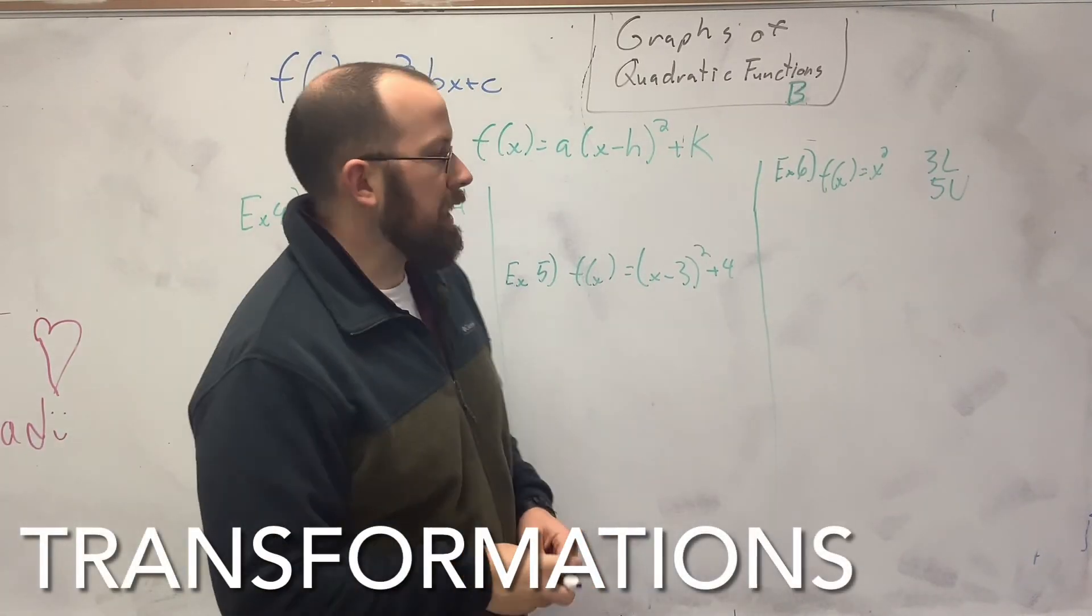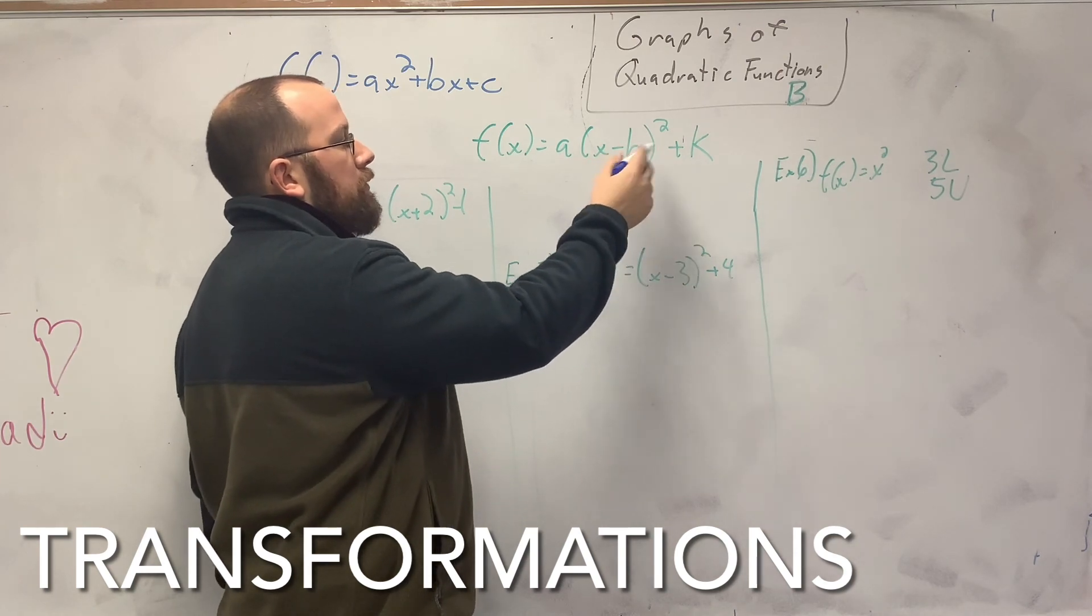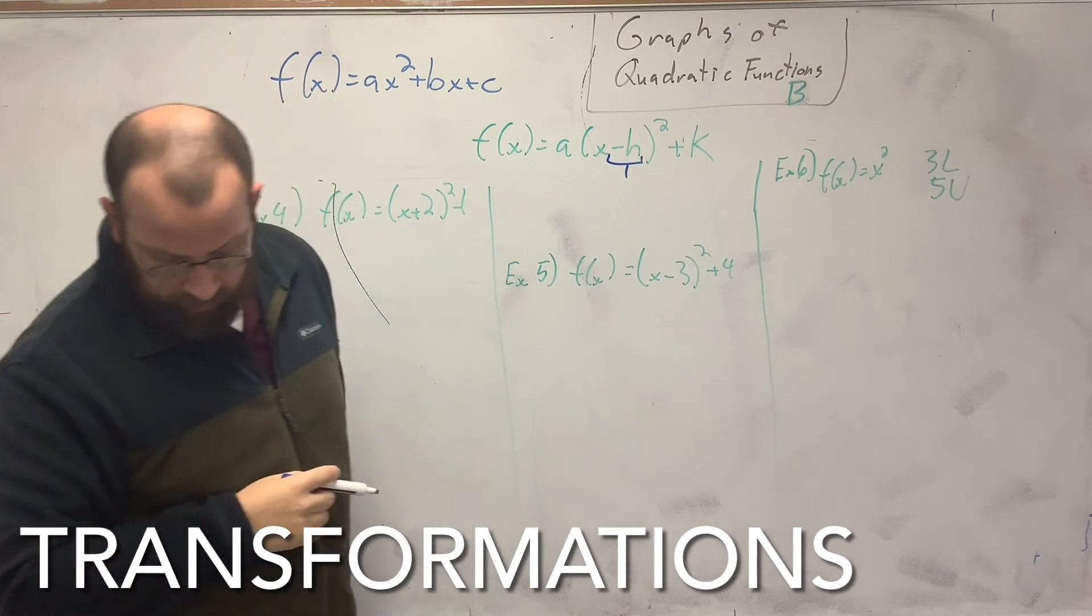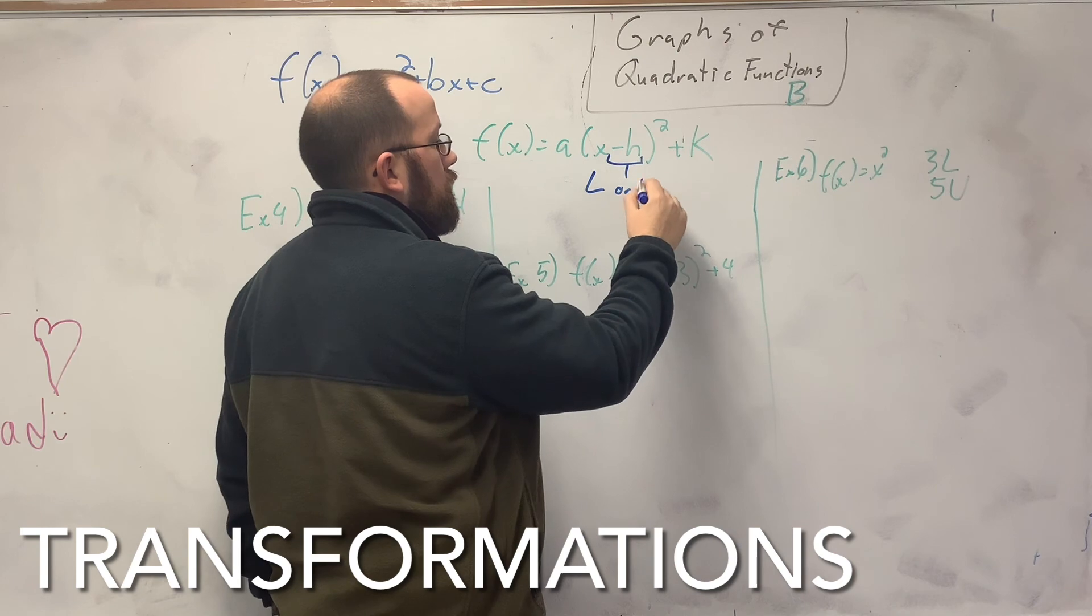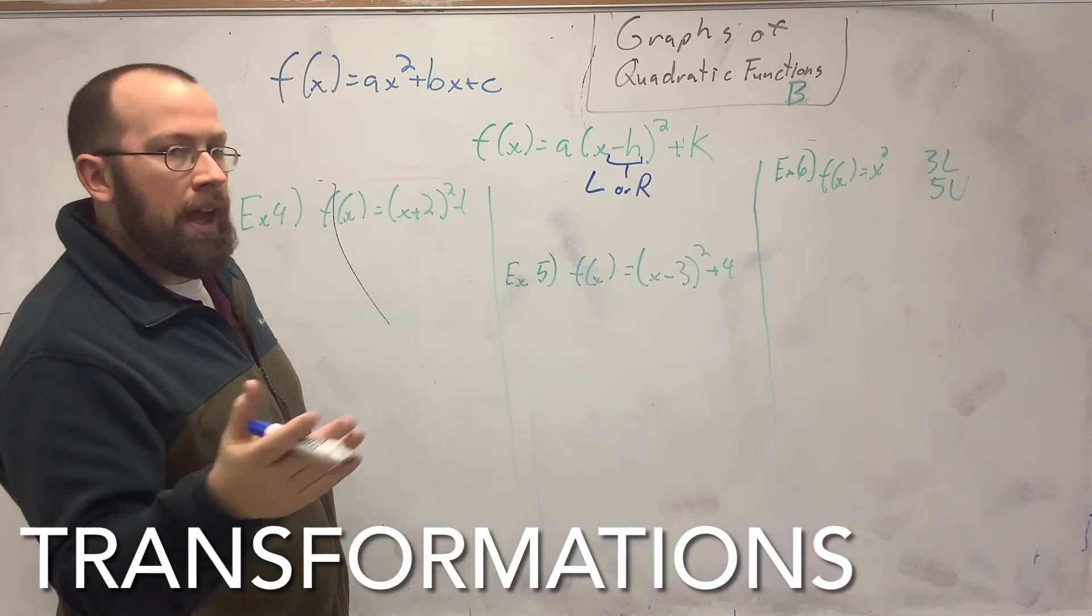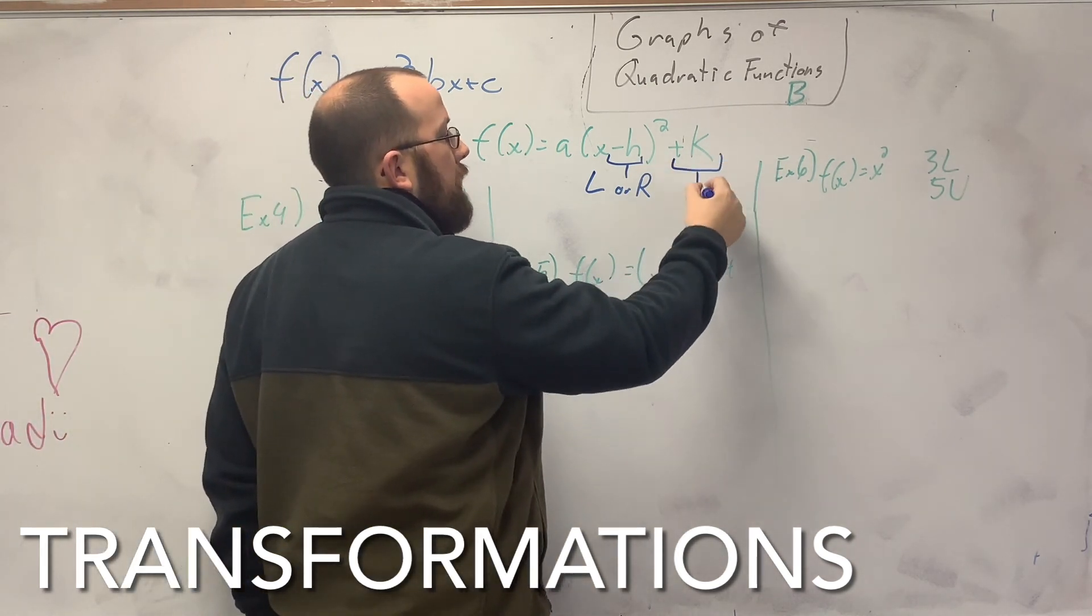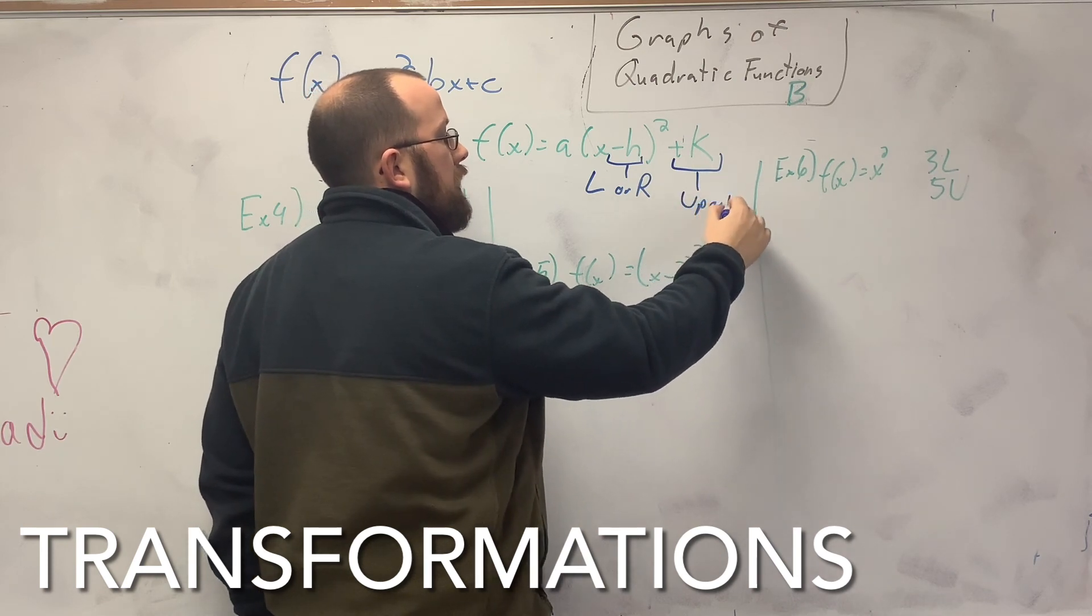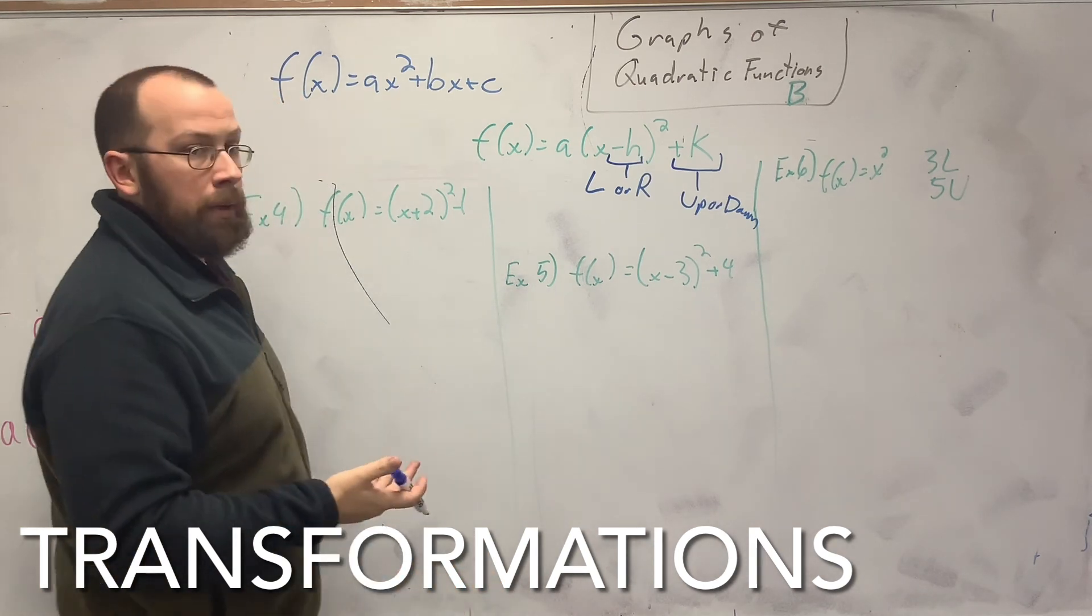Now we're going to talk about basic transformations of a quadratic when it's in vertex form. So this right here is your left or right. Because it's your x value, you add, you move to the right, you subtract, you go to the left. This number back here is your up and down, because it's your y-coordinate. The best way I find to do it is just to show it.